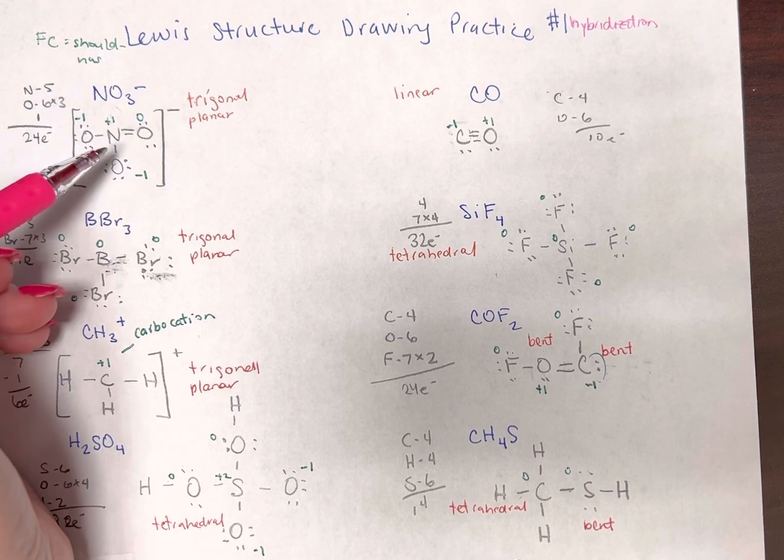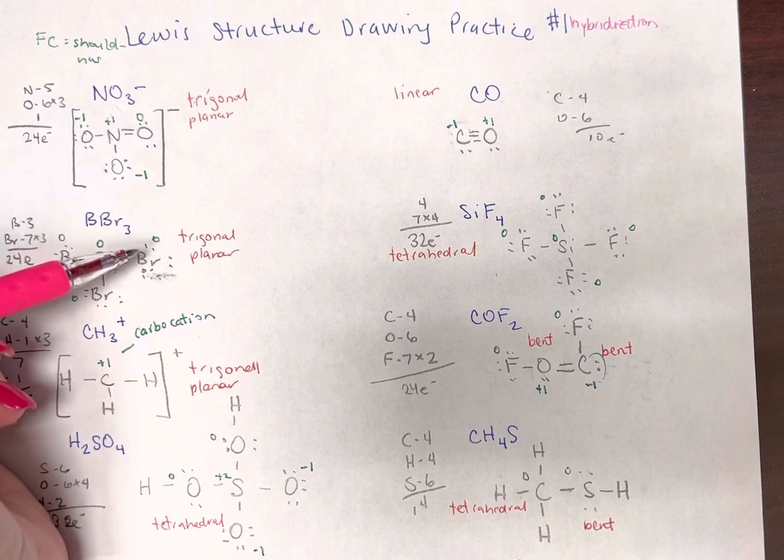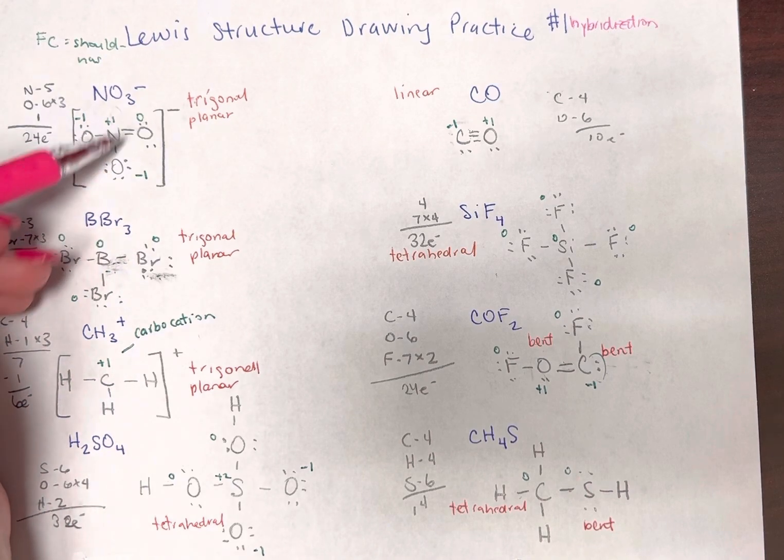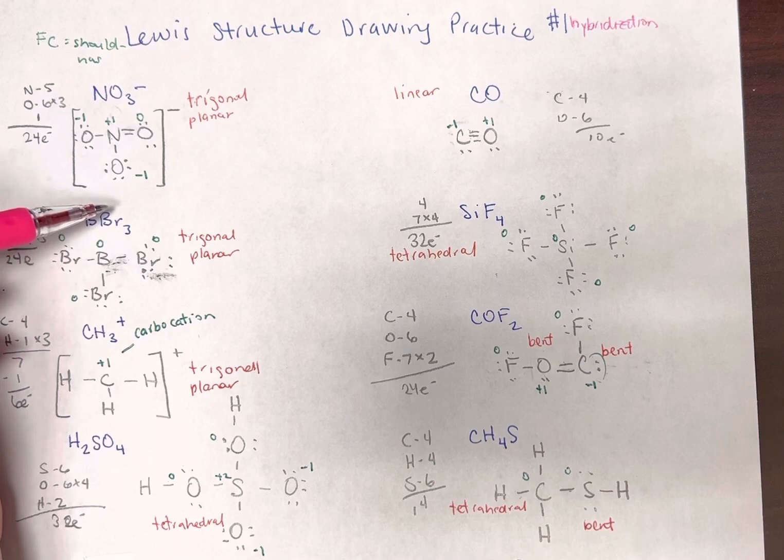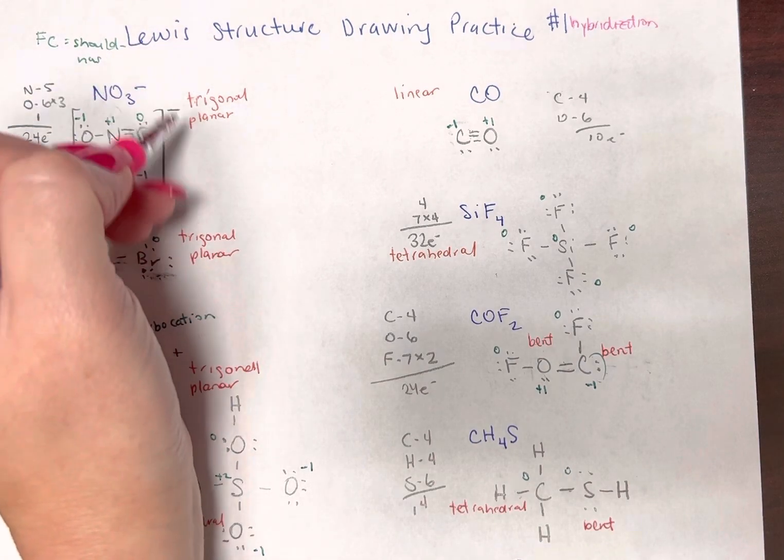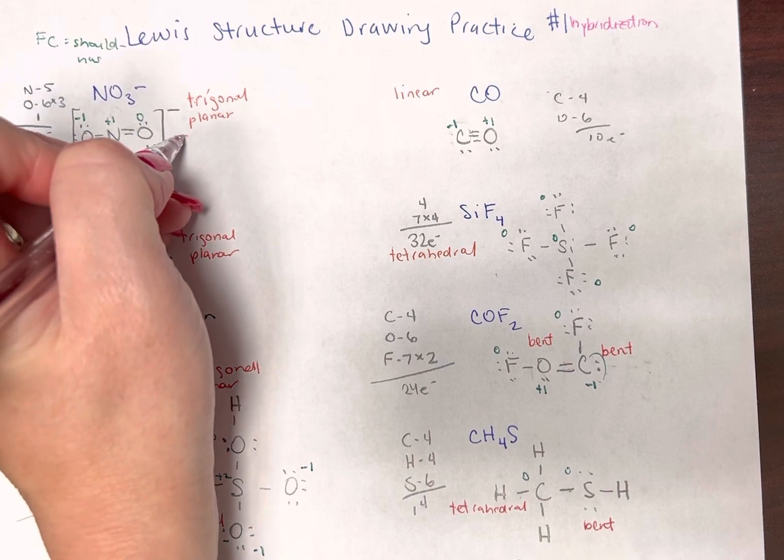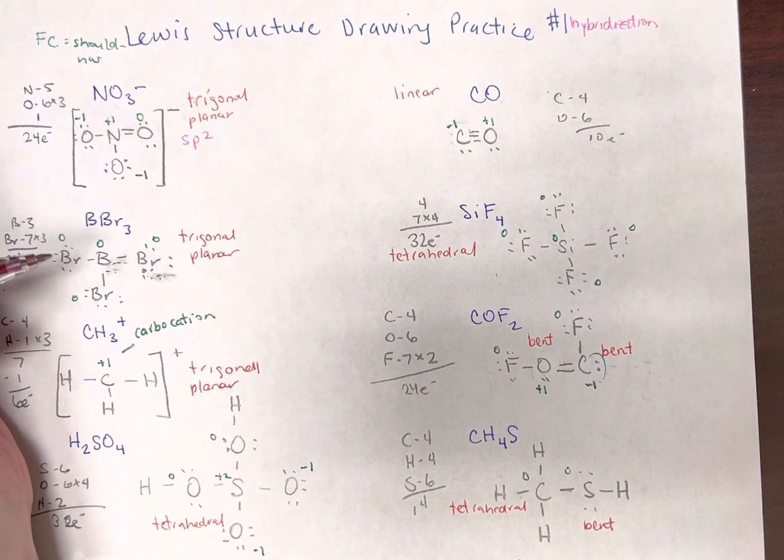All right, so this nitrogen, it has one, two, three friends, three connections, so that means we need three boxes. So friends minus one, three minus one is two, so that would be sp2 for the nitrogen.